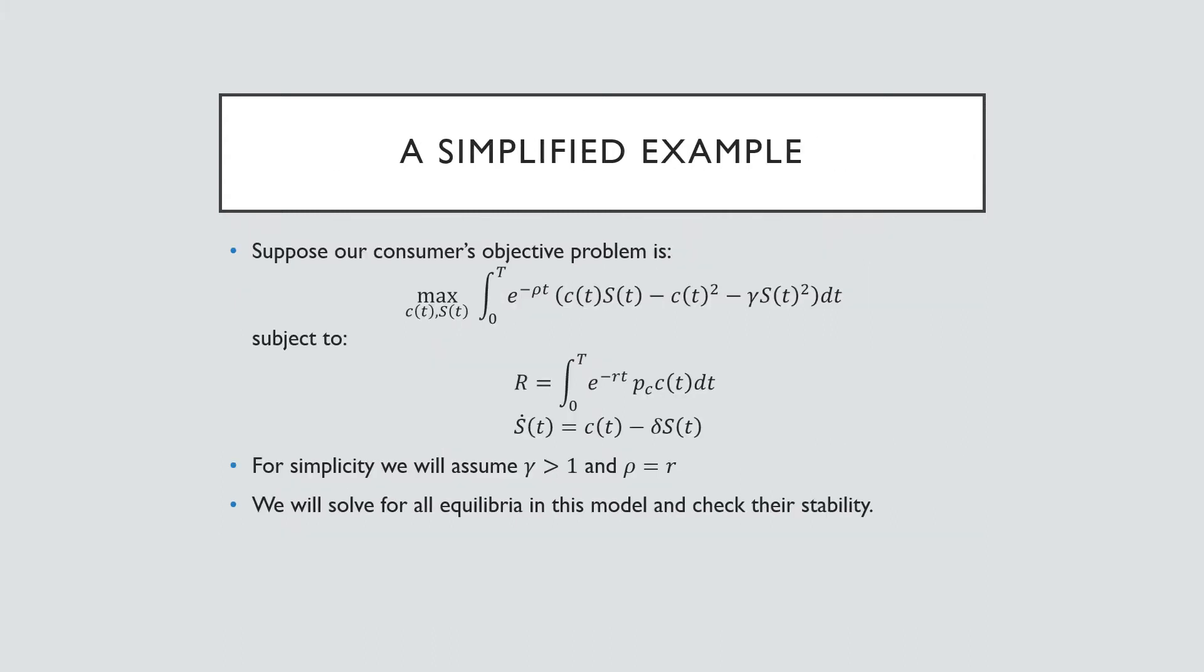So our simplified example is going to be as follows. Suppose we have a consumer whose objective problem is defined as follows, where we have this quadratic utility function and we have this simple budget constraint where we're only thinking about consuming our addictive good and the simplified law of motion. For simplicity, we're going to assume that this gamma term is greater than one and that rho is equal to r. The reason why we assume this gamma term is greater than one is because we want to make sure that this utility function is concave.